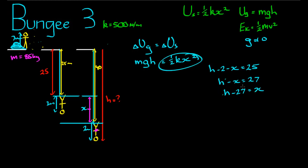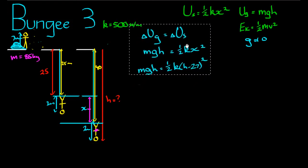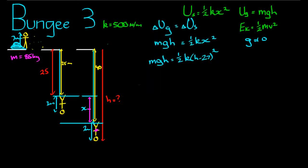We can use this little bit of working here. So instead of writing X in our equation up here, we can have an equation in terms of H. M, G, H is equal to a half K, H take away 27 squared. If we can solve this, we can solve for H. Let's give it a go. So the maths might get a little bit tricky. But as you can see, or as you will see when I expand it out, this is now a quadratic equation.